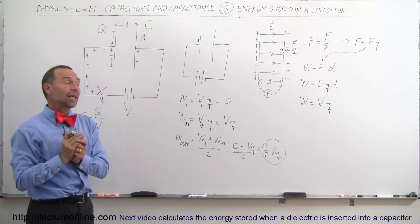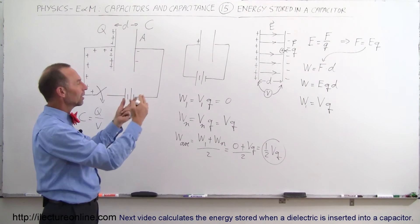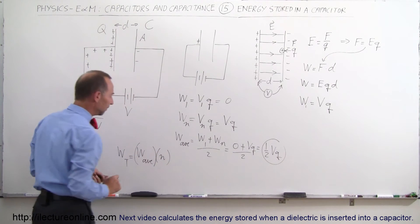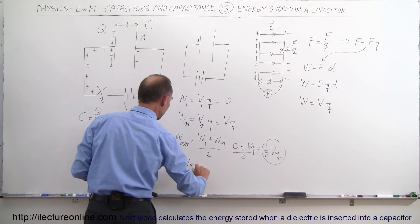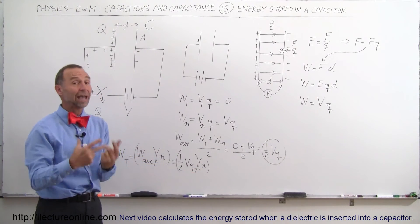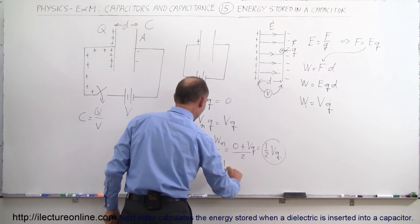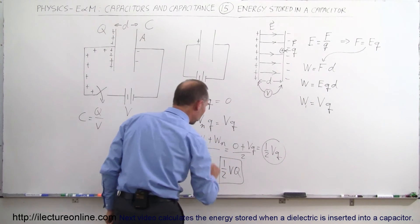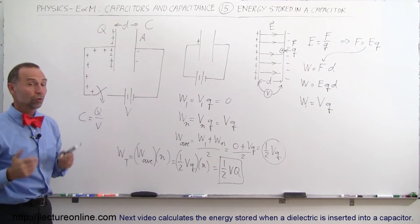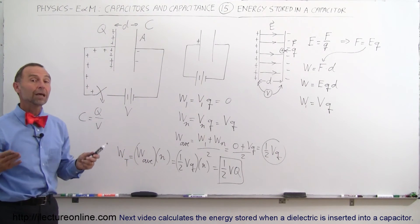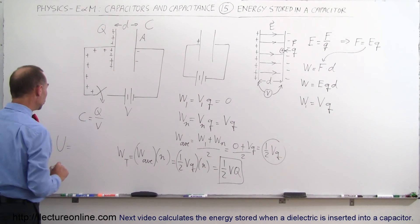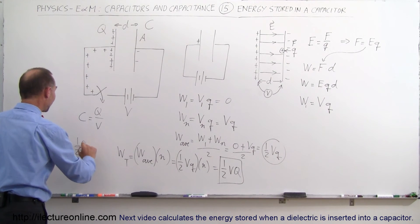So how much work does it take to put all of the charges onto the capacitor plate? The total work is equal to the average work times the number of charges put on there. That is equal to one-half V times Q, multiplied by N. And Q times N — the charge on a single charge times the number of charges — adds up to the total charge placed on the capacitor. So therefore, this is equal to one-half V times Q. That is the total energy it takes to fully charge the capacitor with a potential difference of V. The energy U equals one-half Q times V.